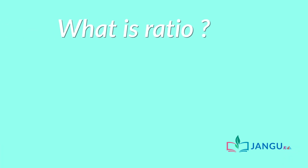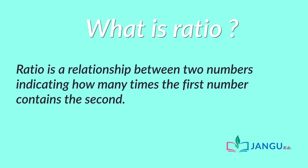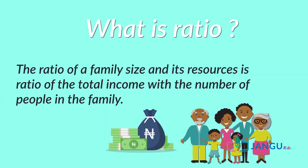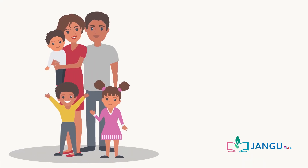In our previous lessons on ratio, we learned that ratio is a relationship between two numbers indicating how many times the first number contains the second. The ratio of a family size and its resources is the ratio of the total income with the number of people in the family.